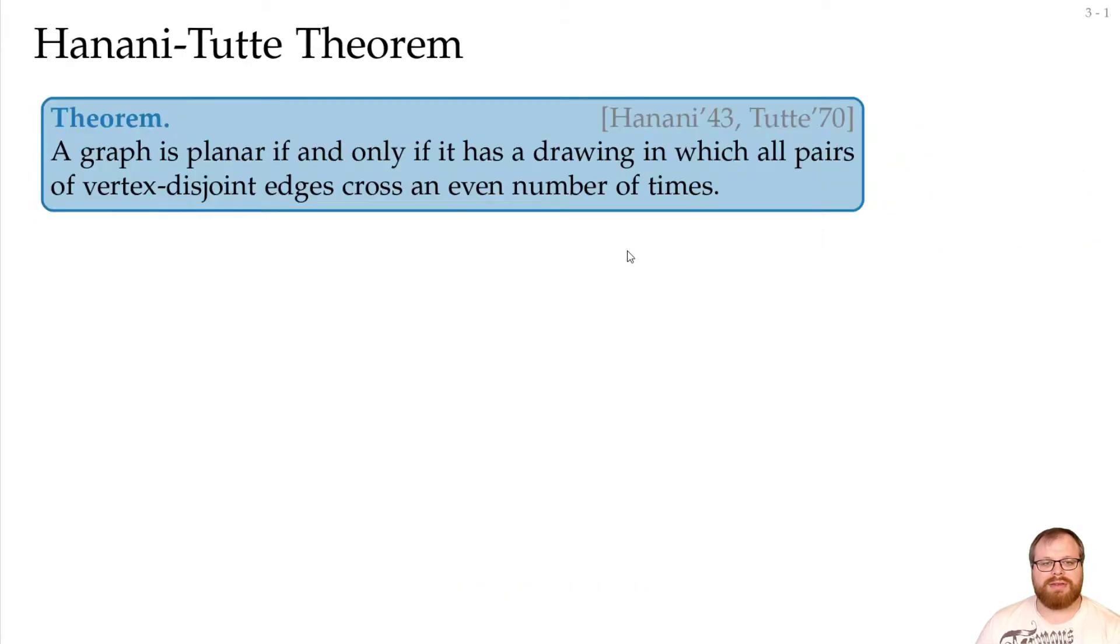There is a classical theorem by Hanani that he proved in 1943 by passing. So it was not what he wanted to prove, but he needed it as a tool. And Tutte in 1970 rediscovered it and formulated it.